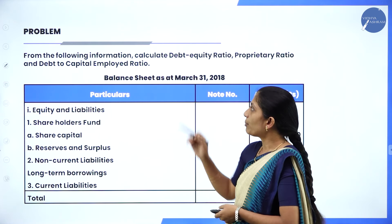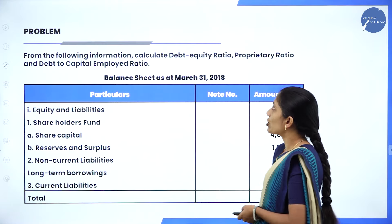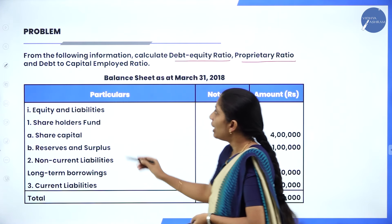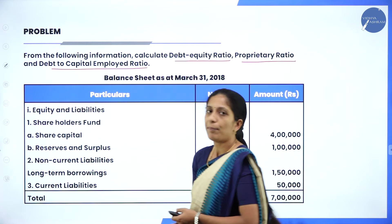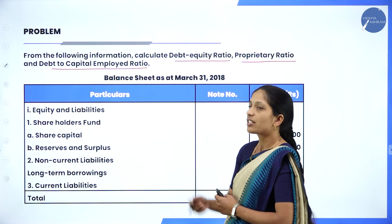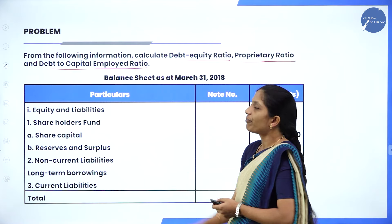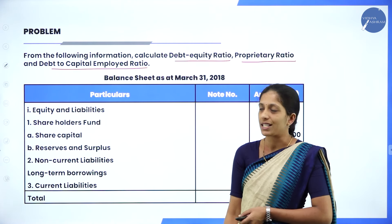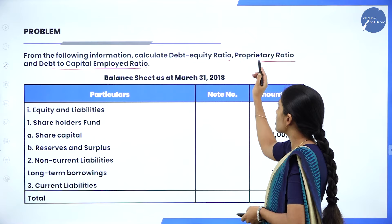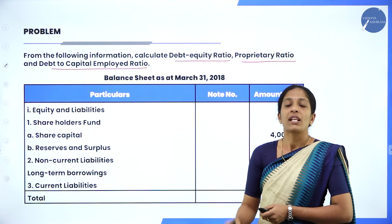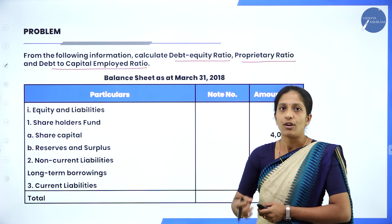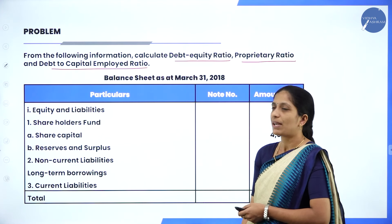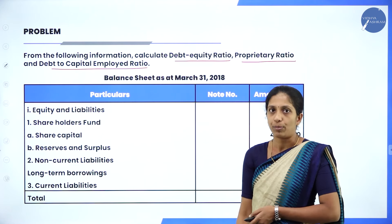Now let us go through a problem. From the following information, calculate debt equity ratio, proprietary ratio, and debt to capital employed ratio. The formula for debt equity ratio is long term debt divided by shareholders fund. Proprietary ratio is shareholders fund divided by capital employed. Debt to capital employed ratio is long term debt divided by capital employed.